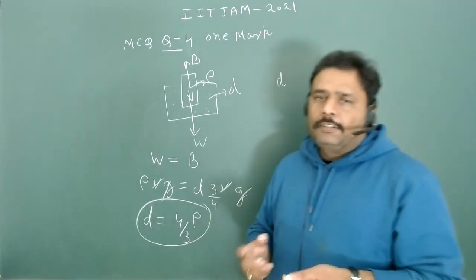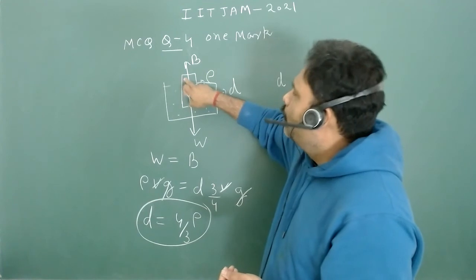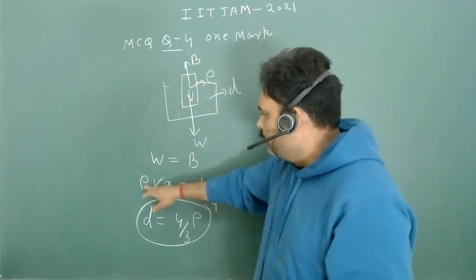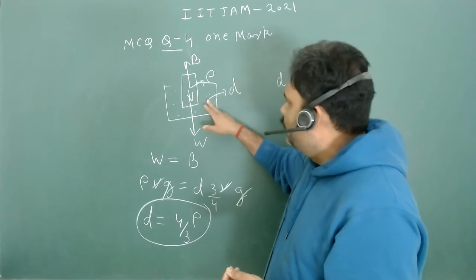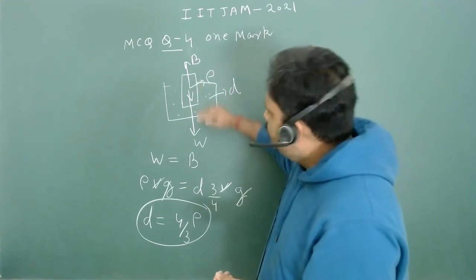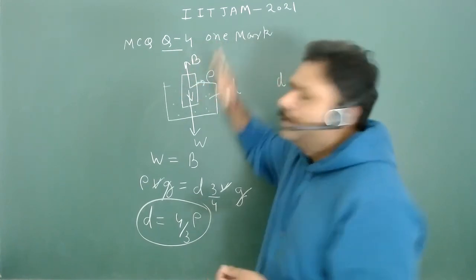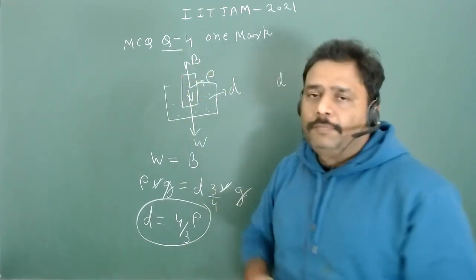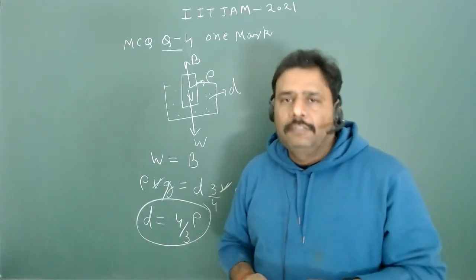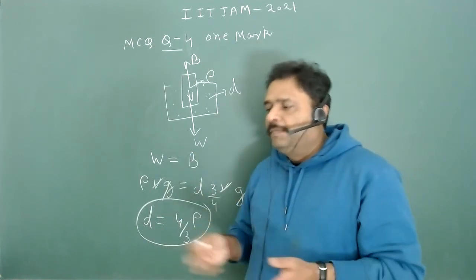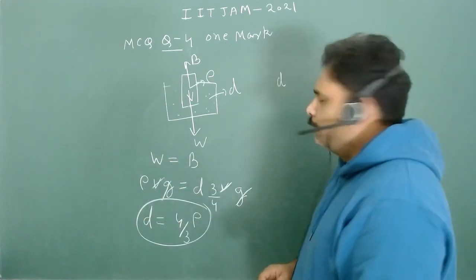The key conceptual points: when calculating weight, use the density of the object; when calculating buoyancy force, use the density of the liquid and the volume of the object that is actually submerged. This problem is conceptual, and you can use the equilibrium condition to solve this type of problem.